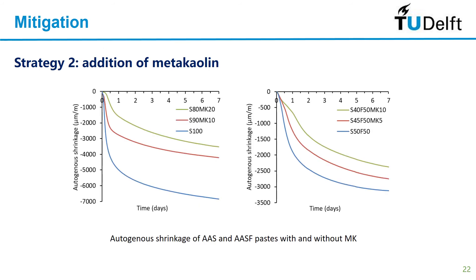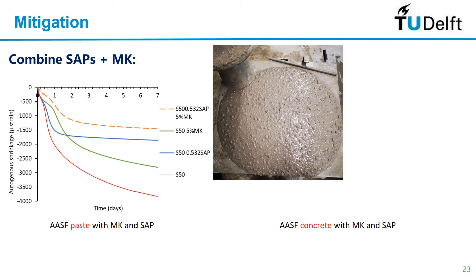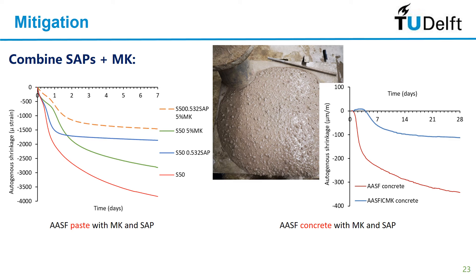We found that the addition of metakaolin can mitigate the shrinkage not only at later age but also at the very early age — this is very important. Since metakaolin works well at early age and SAPs work really well at later age, we thought: why not combine them? Indeed, we found that paste with both SAPs and metakaolin shows much, much lower autogenous shrinkage compared to the reference mixture. Mixed into concrete, it shows good workability and very low autogenous shrinkage, and we found no cracking in three months — about 100 days — because the shrinkage is very low. We successfully solved this problem.